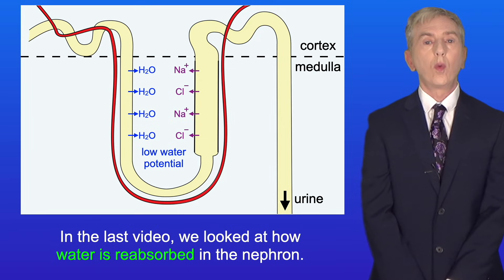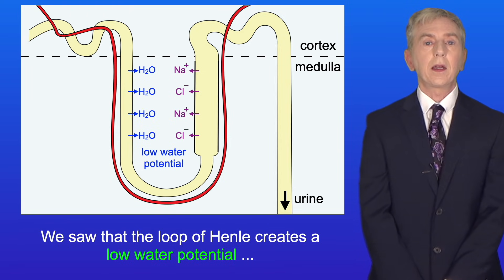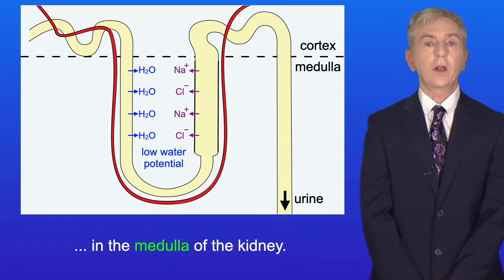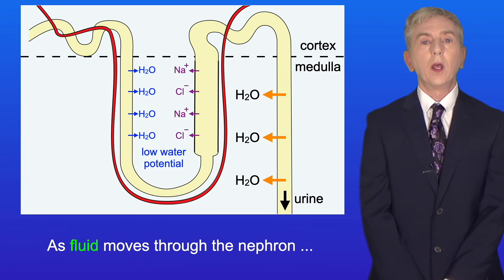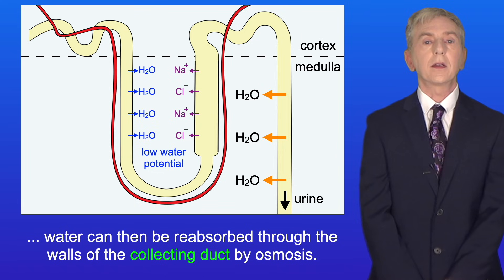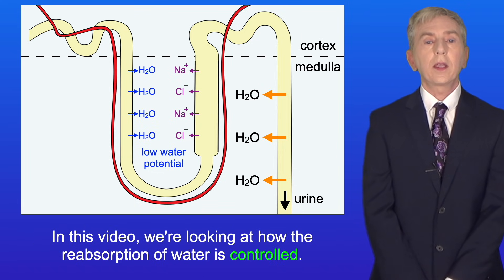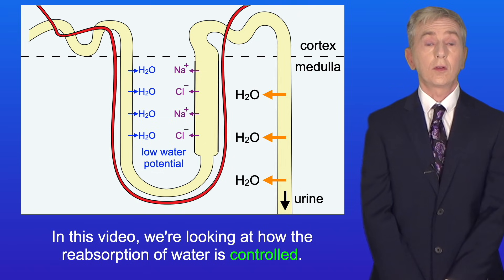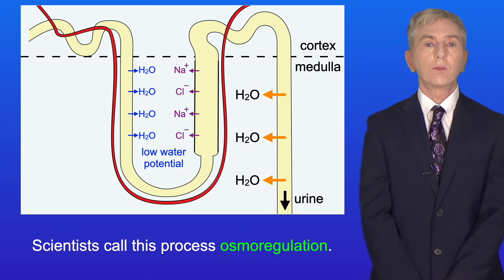In the last video we looked at how water is reabsorbed in the nephron, and if you haven't seen that video then you should watch it now. We saw that the loop of Henle creates a low water potential in the medulla of the kidney. As fluid moves through the nephron, water can then be reabsorbed through the walls of the collecting duct by osmosis. In this video we're looking at how the reabsorption of water is controlled — scientists call this process osmoregulation.